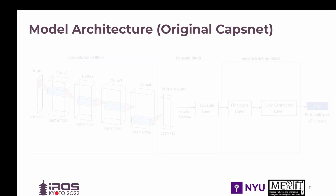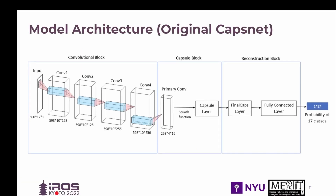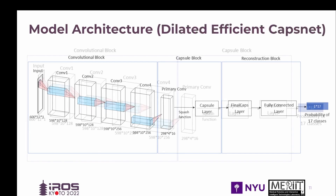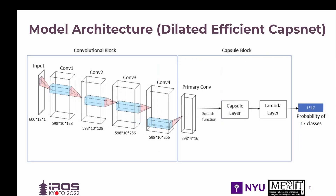The original CapsNet is composed of a convolutional block, a capsule block, and a reconstruction decoding block. Our proposed efficient CapsNet cuts off the reconstruction decoding block, largely reducing the model complexity while maintaining the model performance. Adding dilation to several convolutional layers further reduces the number of trainable parameters and training time. The proposed dilated efficient CapsNet consists of two blocks.